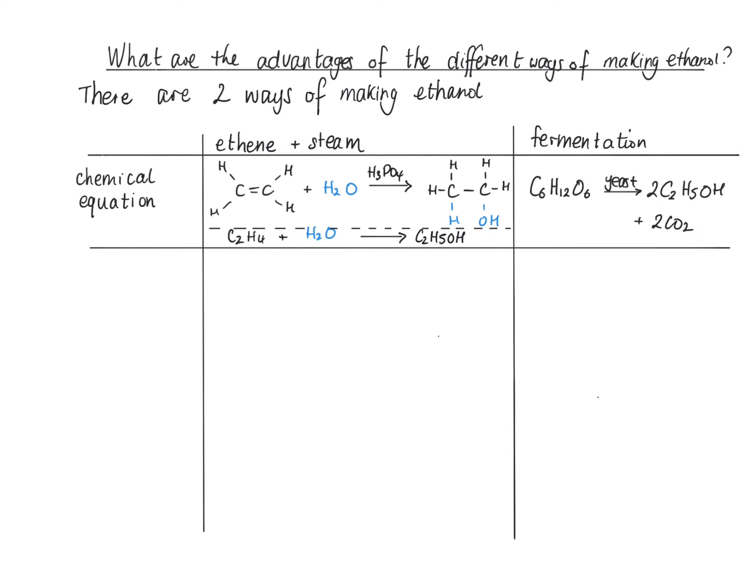Compare that with the chemical equation for fermentation. You take sugar C6H12O6 with the catalyst being yeast, and it makes two moles of ethanol, two C2H5OH plus two CO2.